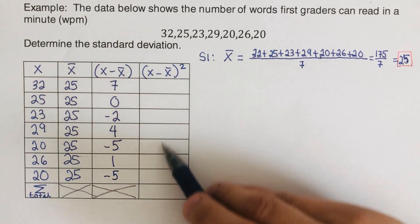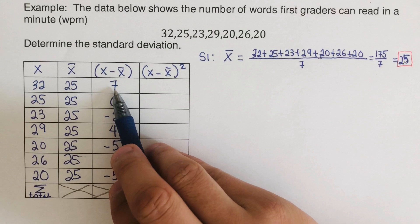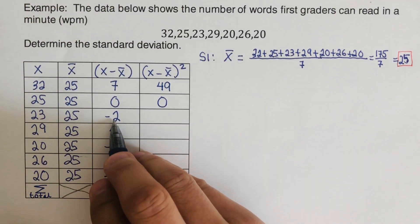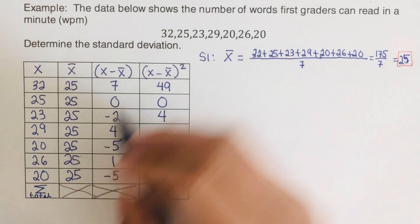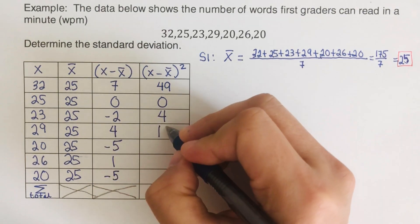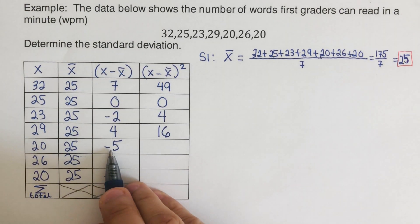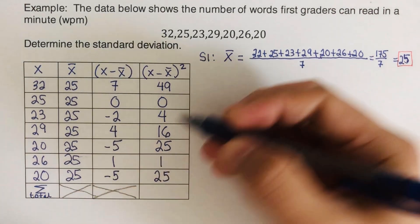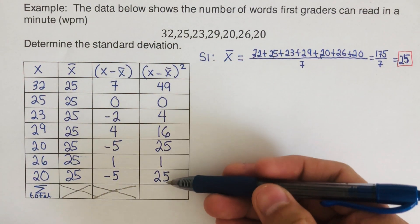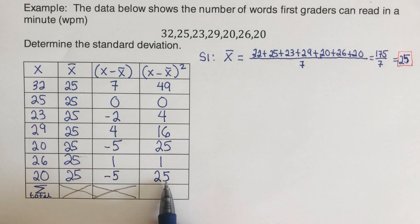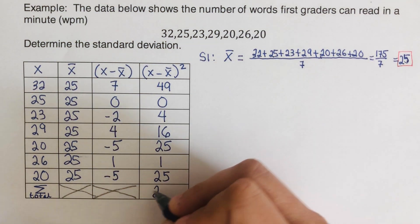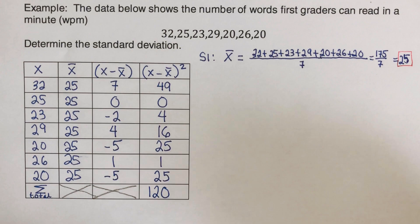Squaring each difference: 7² = 49, 0² = 0, (−2)² = 4, 4² = 16, (−5)² = 25, 1² = 1, (−5)² = 25. All values become positive because squaring eliminates negatives. Adding all squared differences: 49 + 0 + 4 + 16 + 25 + 1 + 25 = 120. This total is the summation of (x − bar x)².